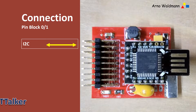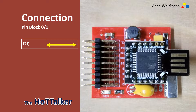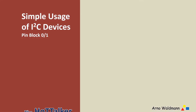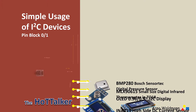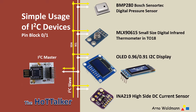The first pin blocks zero and one are the I2C bus connector. The I2C bus was the real main reason for the development of the Hot Talker, because the I2C world offers all the necessary sensors and modules that RC model makers need. Here is a selection of suitable I2C devices which are available as standard modules. A special feature of I2C sensors is that they usually provide the measured values directly as needed, without any additional software or hardware overhead.